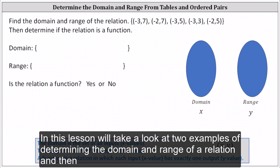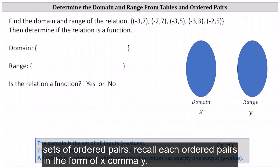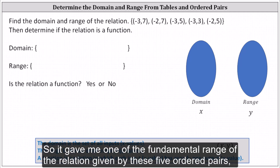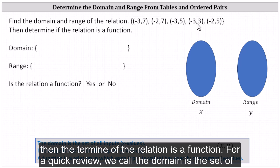In this lesson, we'll take a look at two examples of determining the domain and range of a relation, and then determine if the relation is a function. In these examples, the relations are given as sets of ordered pairs. Recall each ordered pair is in the form of x comma y. So again, we want to find the domain and range of the relation given by these five ordered pairs, then determine if the relation is a function.